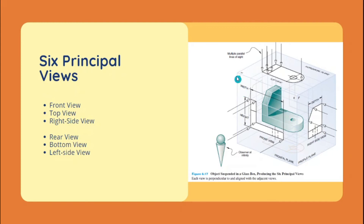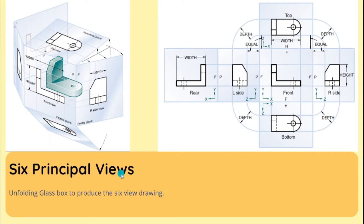If a three-dimensional object is placed inside a box made of glass, we can see all six principal views: the front view on the front face, the top view on the top face, the right side view on the right face, the left side view on the left face, the rear view on the back face, and the bottom view on the bottom face. If we unfold each face of the glass box, we obtain all six views — top, front, right side, left side, rear, and bottom. This unfolding shown here follows the European standard.